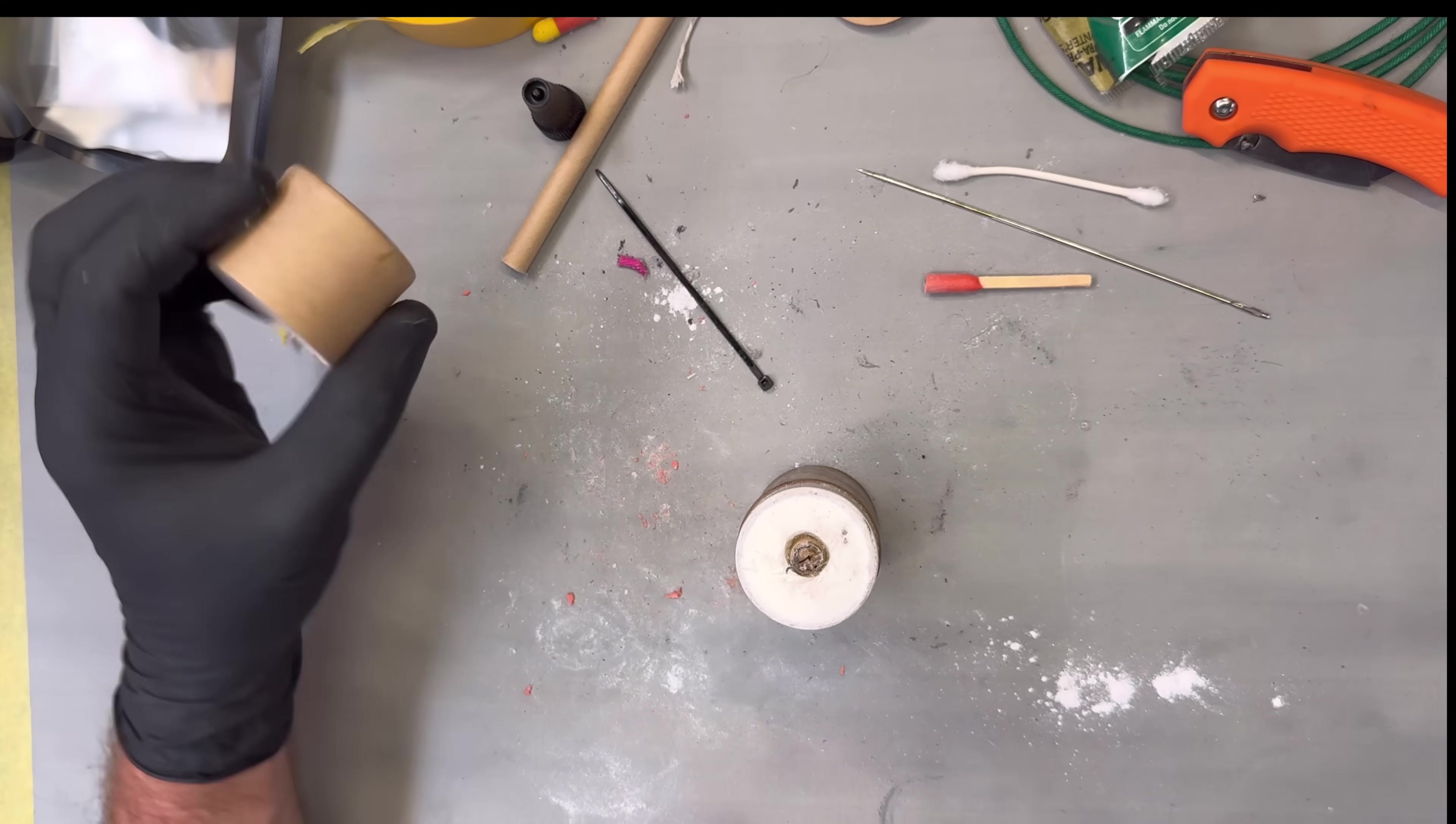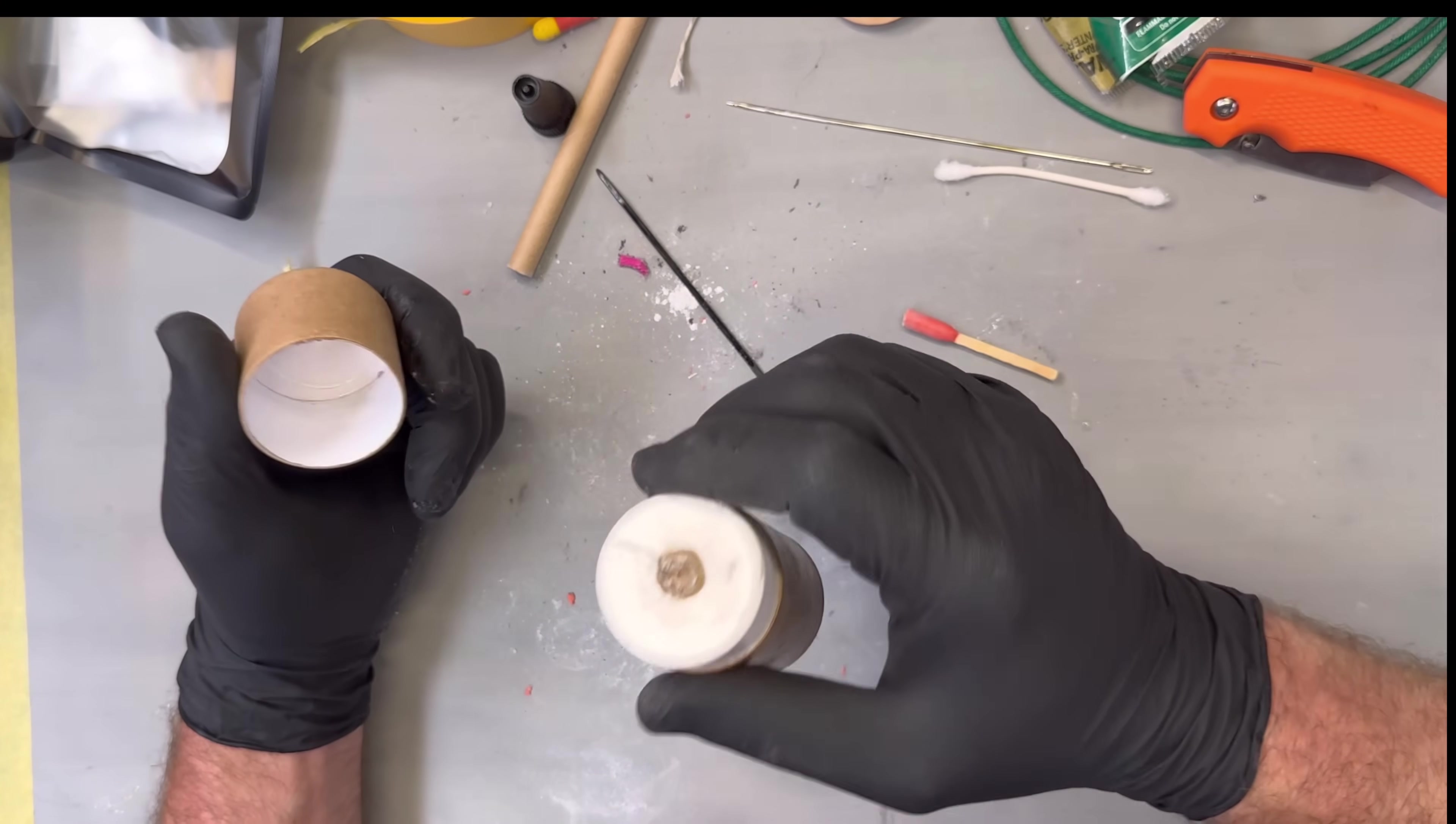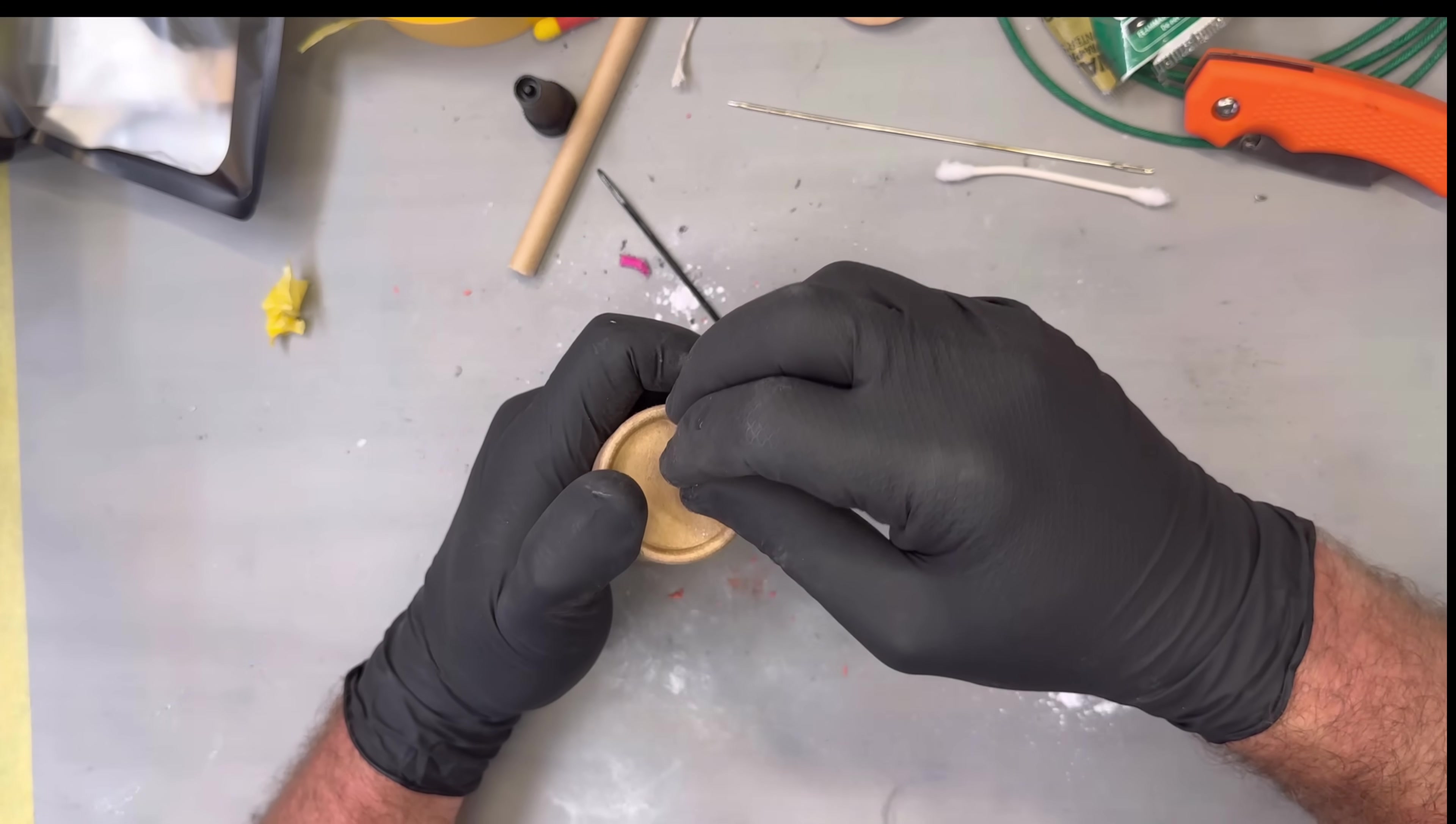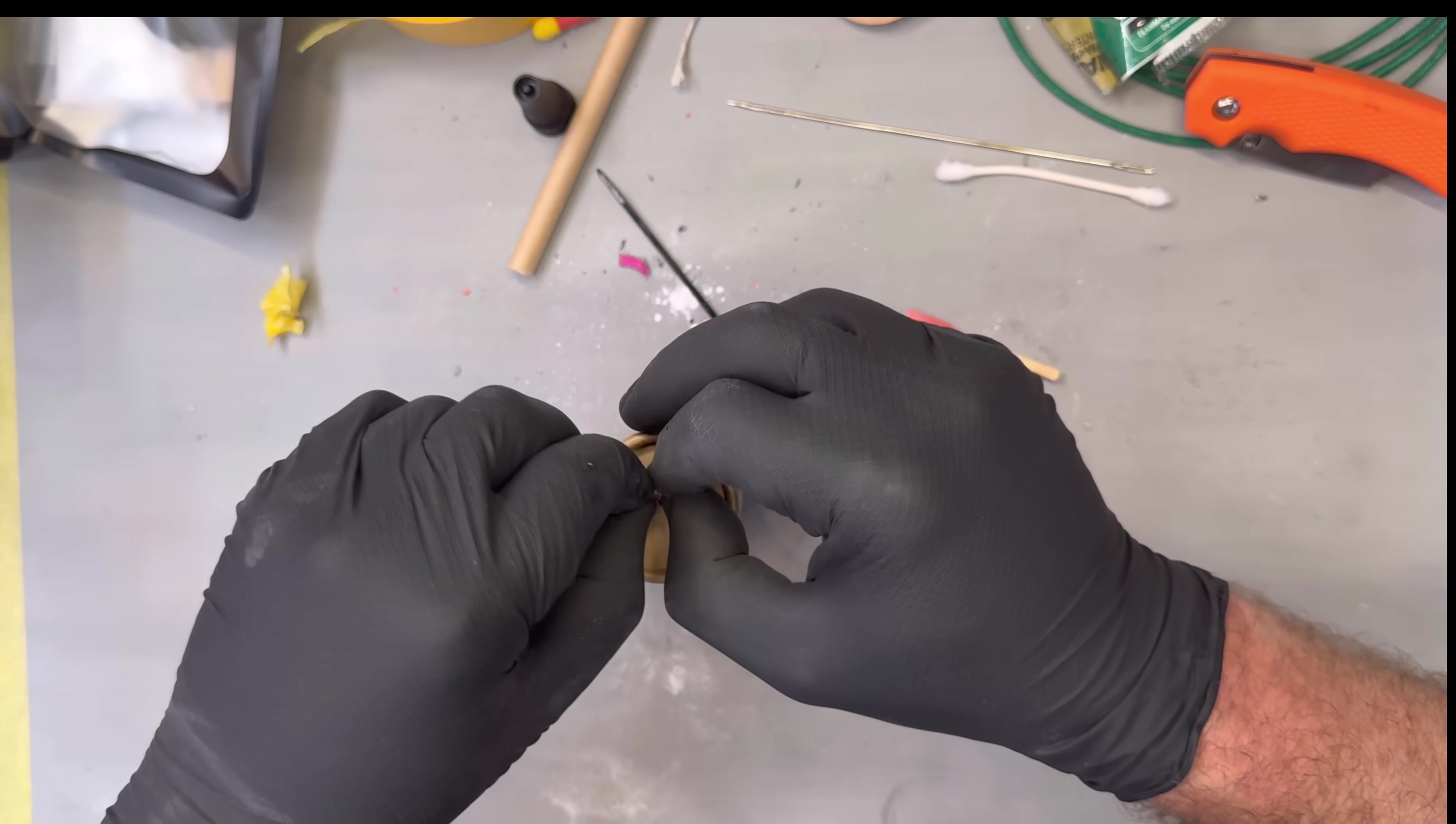Put some glue so it does not pull through. Add activator. Now we puncture this. Now we feed this wire pull through here.